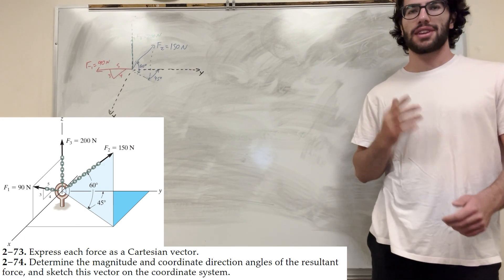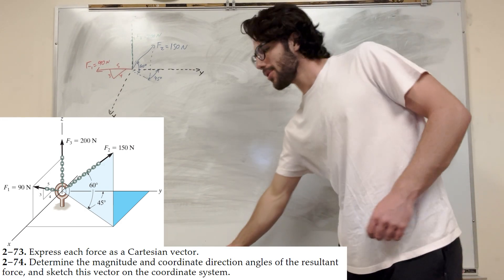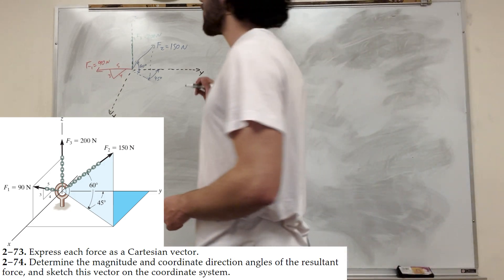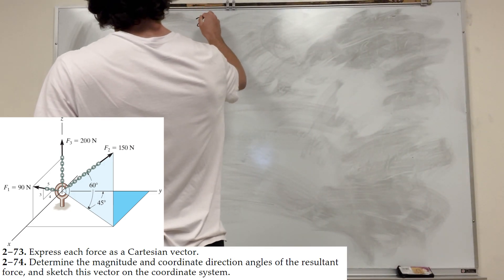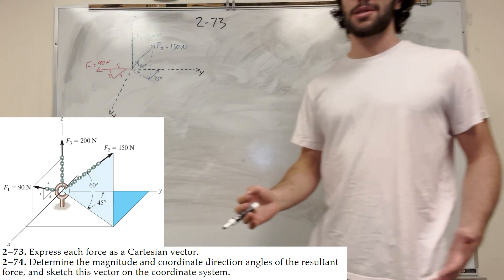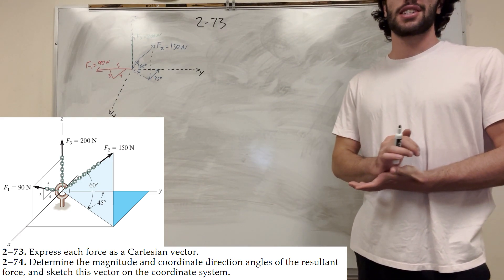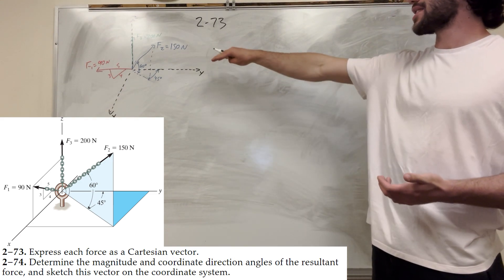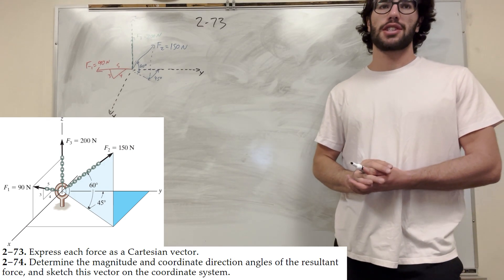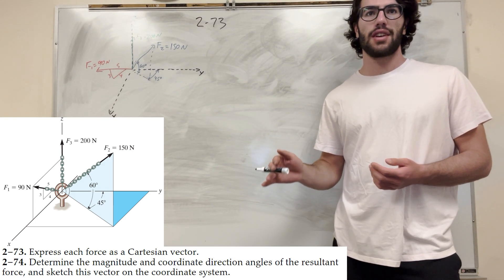What's up, Cal gang? We're back with another problem. This is problem 2.73. So what is this problem asking? We are given these three vectors — I'll have the picture here too — and it wants us to express each force as a Cartesian vector.